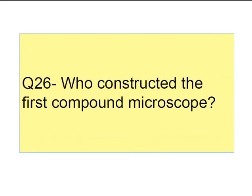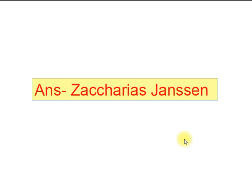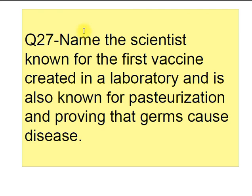Question number twenty-six: who constructed the first compound microscope? Answer is Zacharias Janssen. Question number twenty-seven: name the scientist known for the first vaccine created in a laboratory, and also known for pasteurization and proving that germs cause disease. Answer is Louis Pasteur.